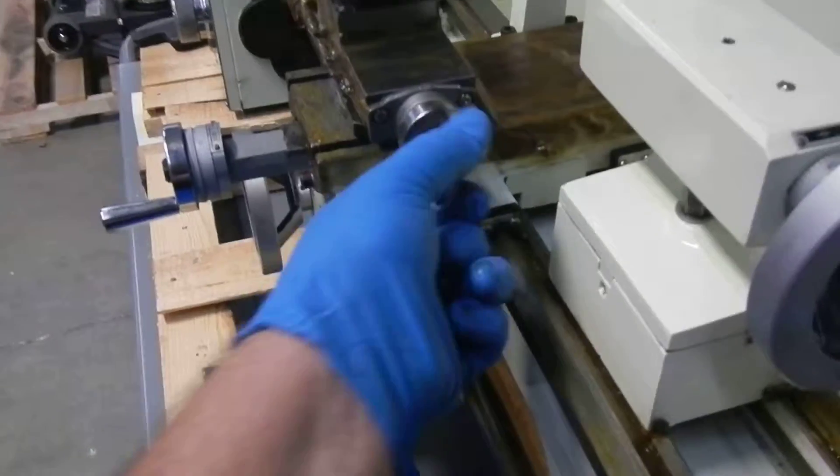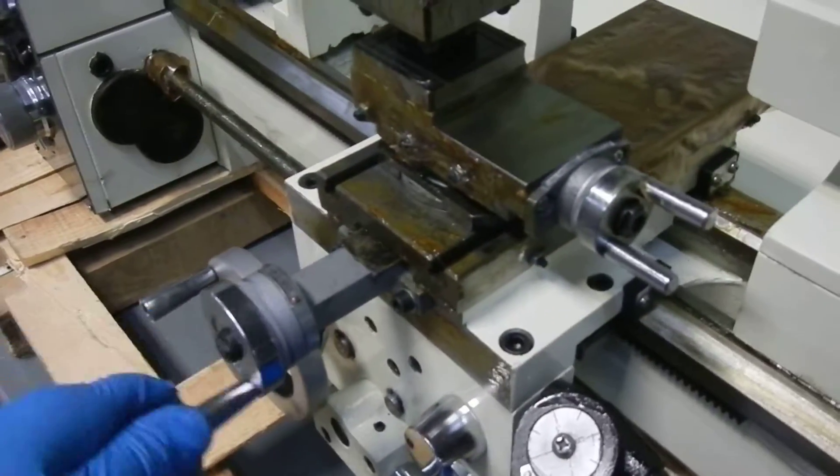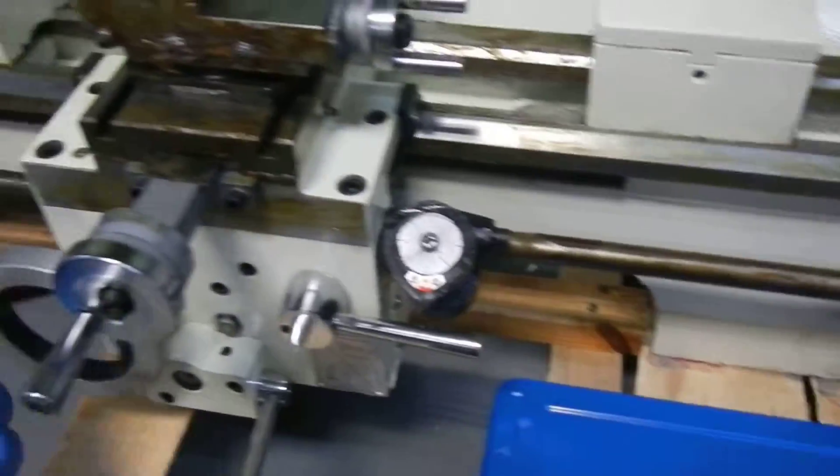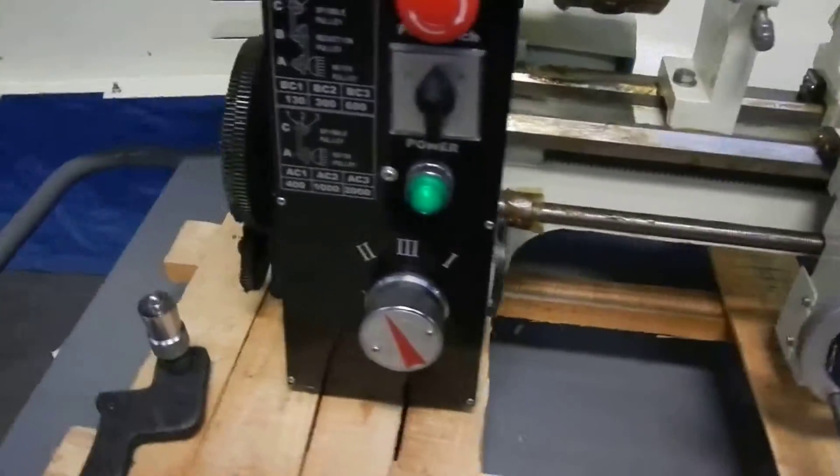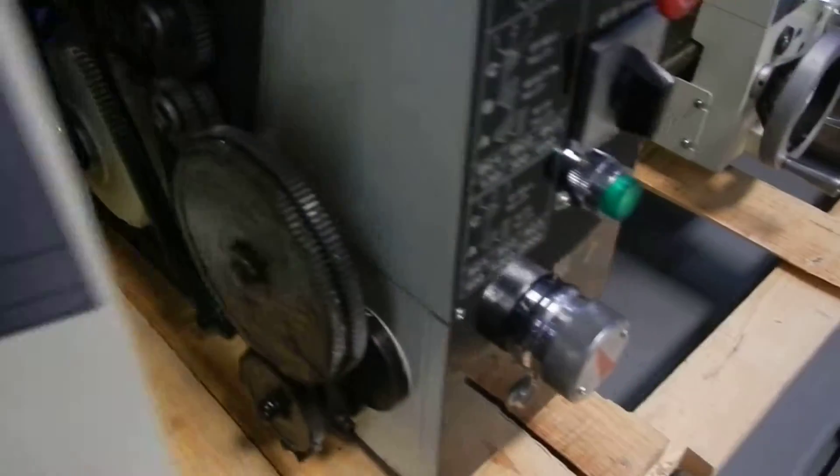You've got your tail stock that operates. You've got your tool post feed, cross feed, and longitudinal feed. So other than this broken part, it's in really good condition.